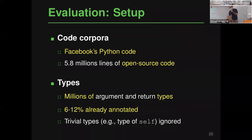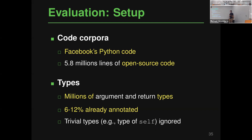For evaluation, we used two corpora: all Python code at Facebook, and a large corpus of open-source typed Python code. Together these give millions of argument and return type slots, of which only 6–12% are already annotated — enough to learn from but leaving a lot to predict. We filtered trivial cases like 'self' annotations.